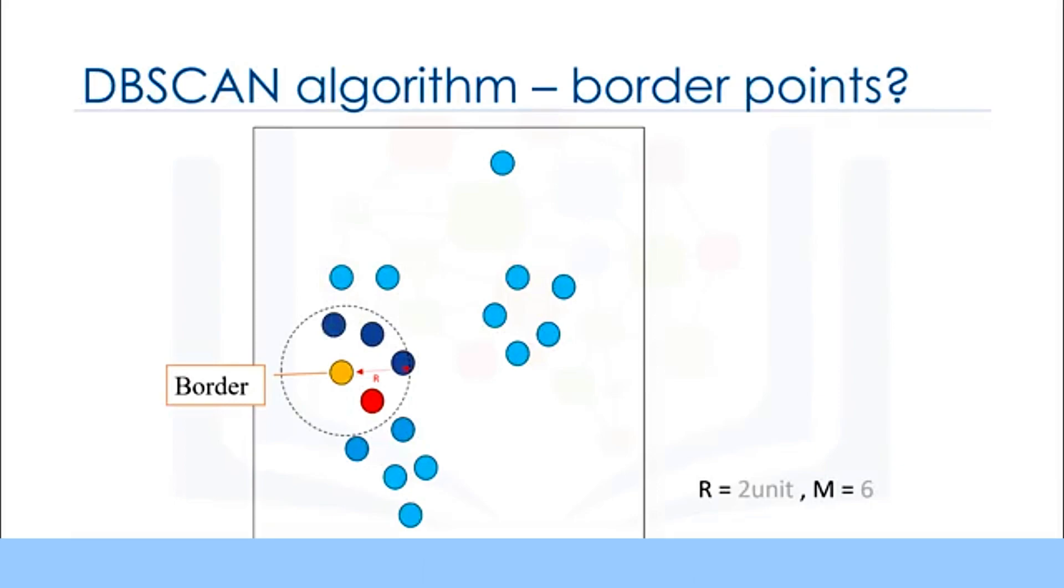A data point is a border point if its neighborhood contains less than M data points, or it is reachable from some core point. Here, reachability means it is within our distance from a core point. Even though the yellow point is within the two centimeter neighborhood of the red point, it is not by itself a core point because it does not have at least six points in its neighborhood.